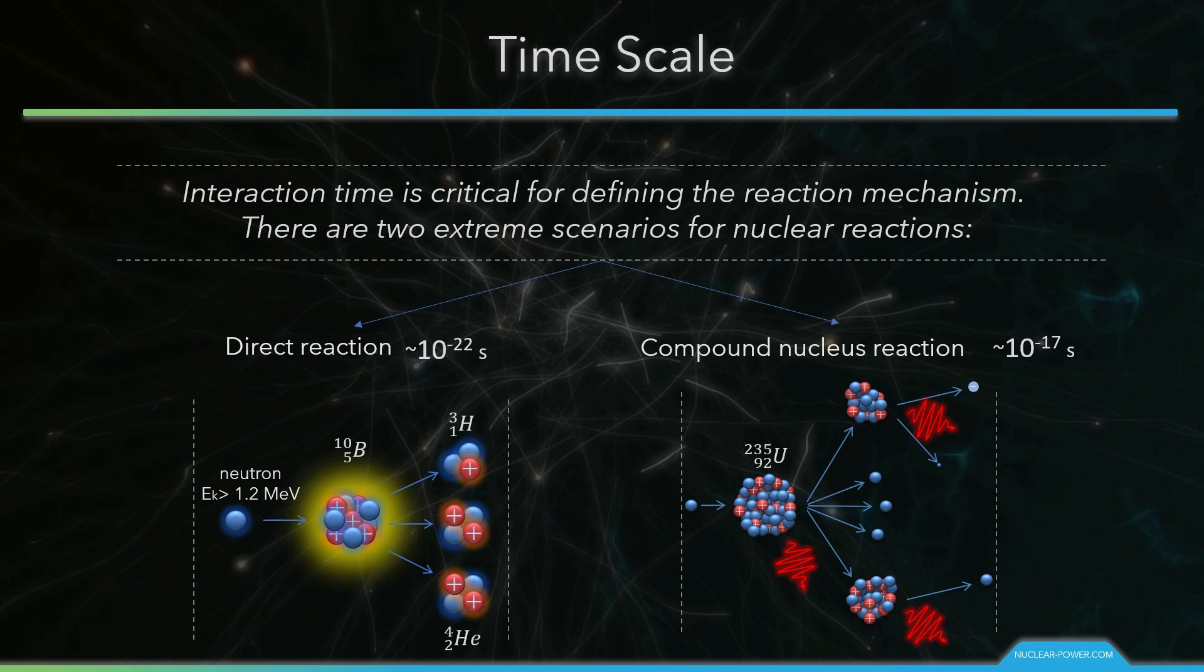The compound nucleus reactions involve many nucleon-nucleon interactions. A large number of collisions between the nucleons leads to a thermal equilibrium inside the compound nucleus. Products of the compound nucleus reactions are distributed near isotropically in angle. The nuclear fission reaction is a typical example of compound nucleus reactions.